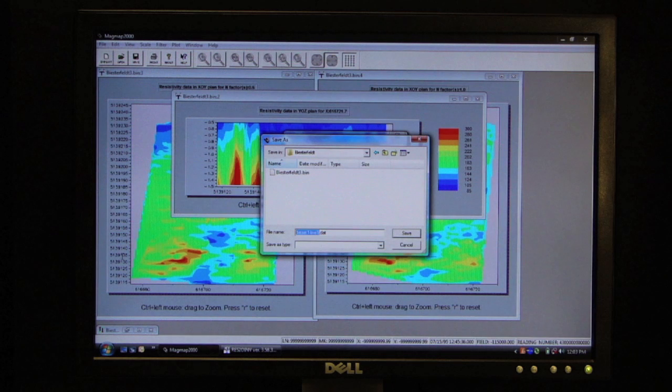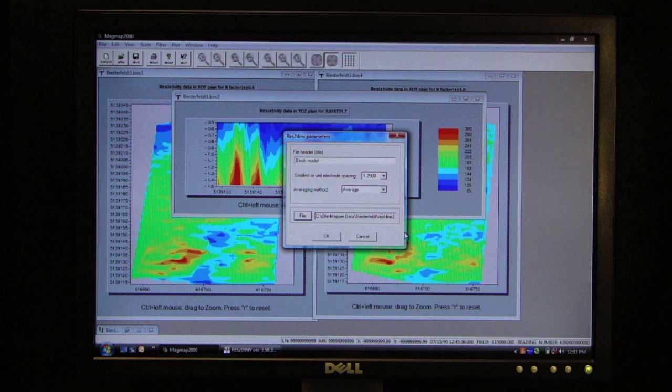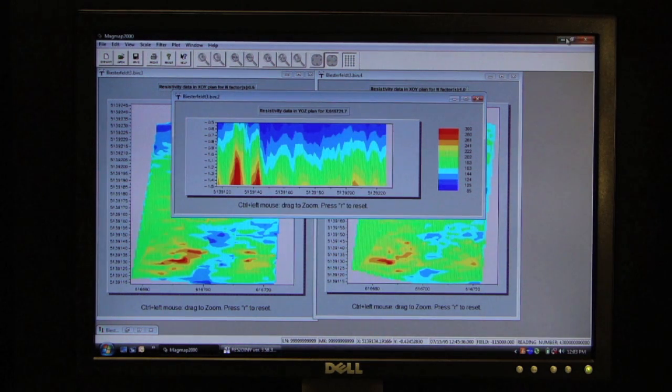And I will call this test line2.dat, the Res2D software looks for the DAT extension. And I'm going to save it. So what I've done, I've created an export file that can be inverted in the Res2D software.